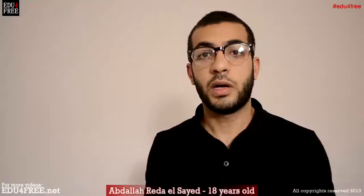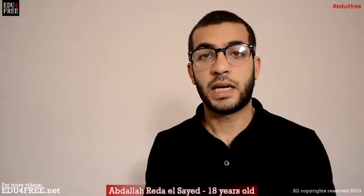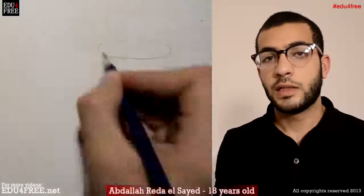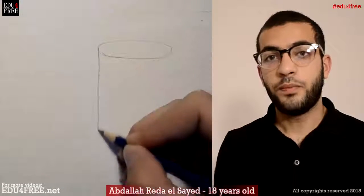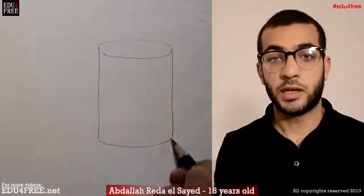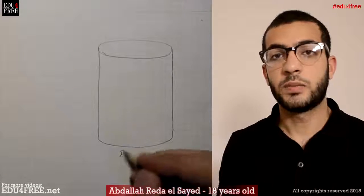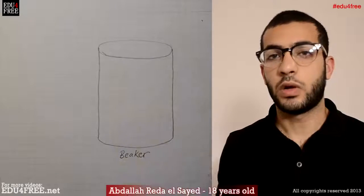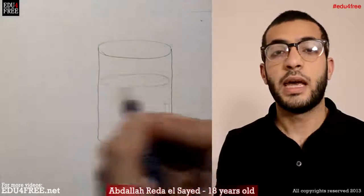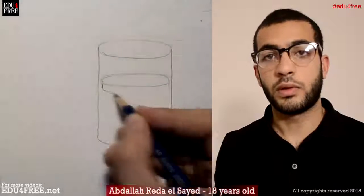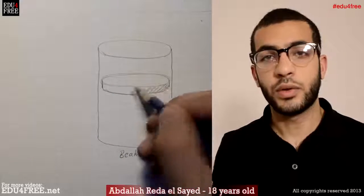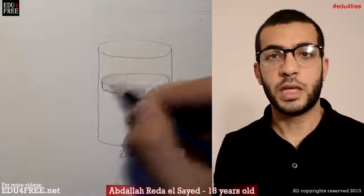Today we are going to talk about Pascal's Principle. It's very simple. Let's suppose that we have a beaker and this beaker contains water or any other kind of liquid, and there is a piston over the liquid, and inside the liquid there is an object.